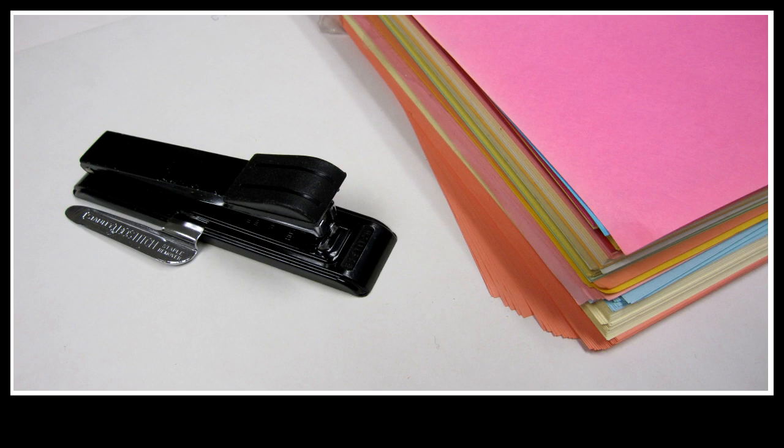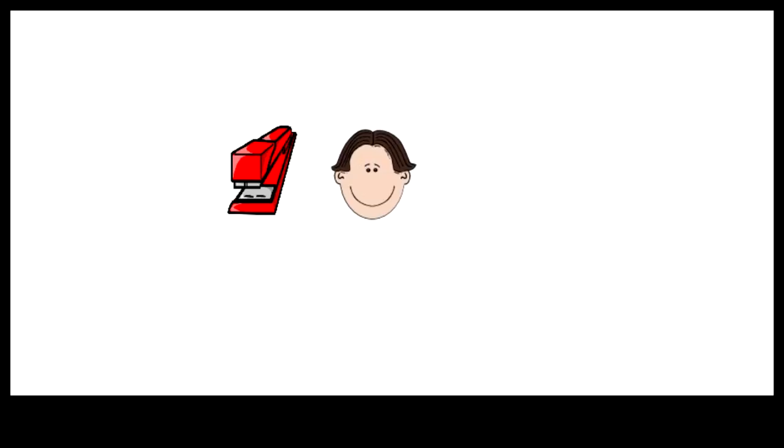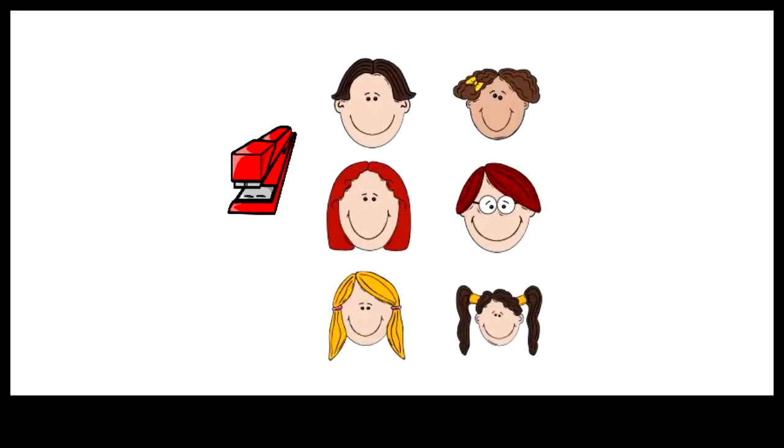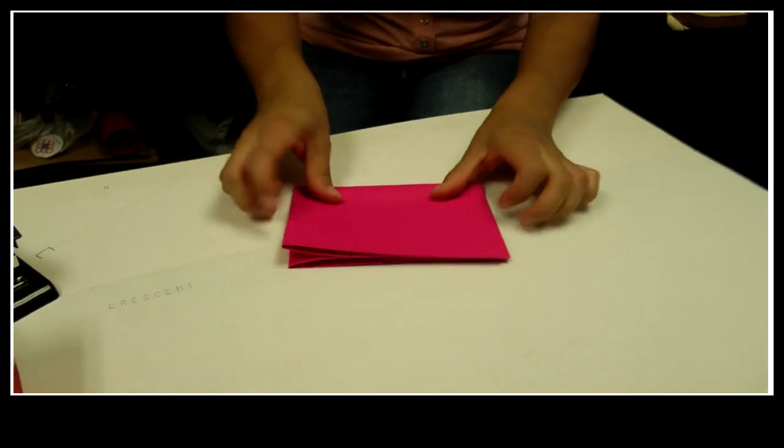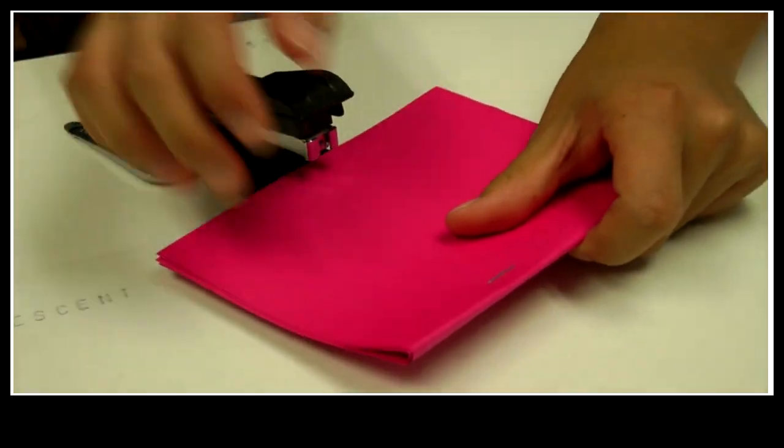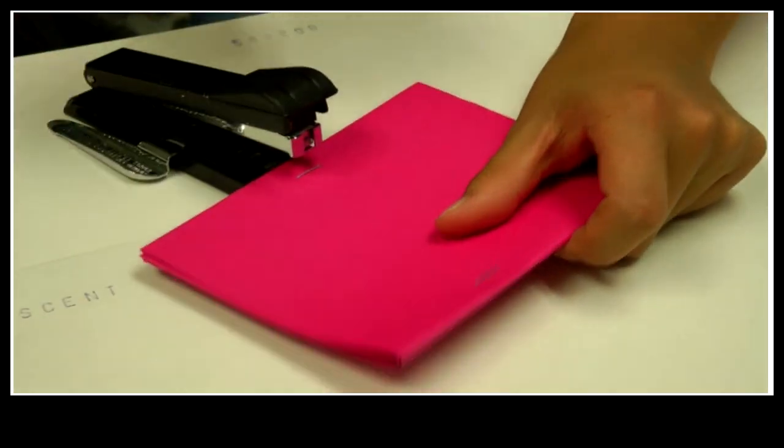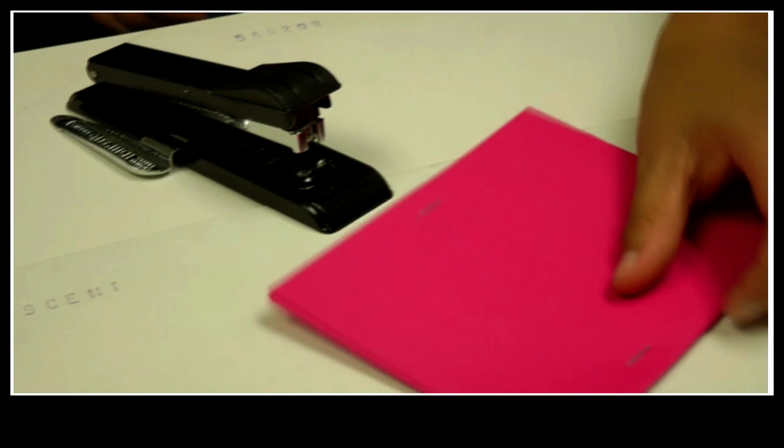Let's look at a simple short run production process where there is a fixed input, a stapler, and some variable input. This process consists of two steps, namely folding a document twice and stapling it. The stapled document is the output.